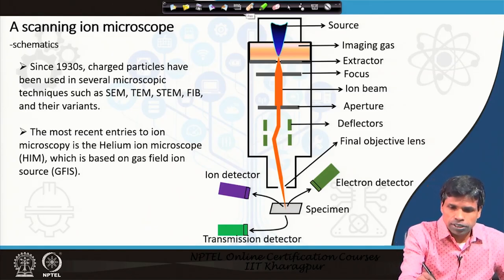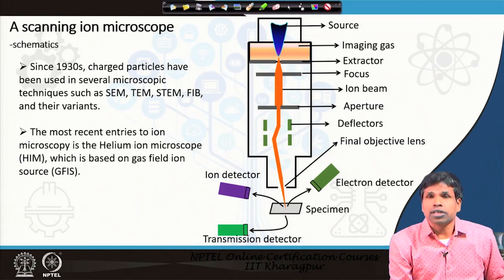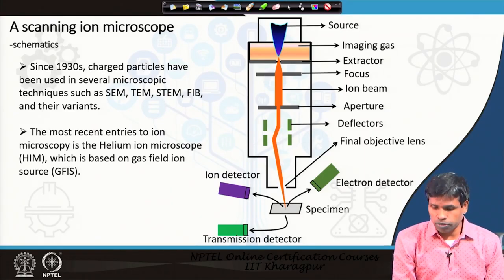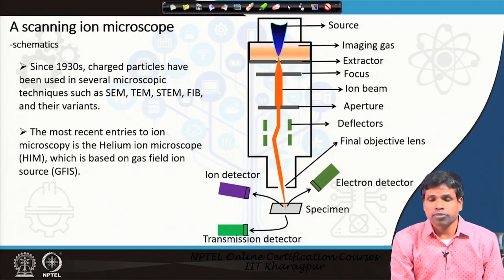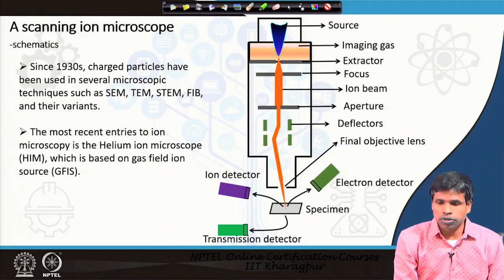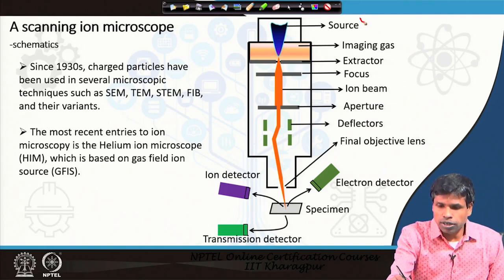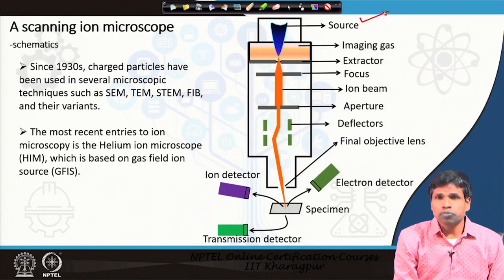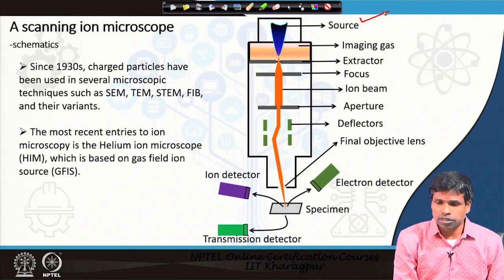The schematic is not much different as far as the arrangement is concerned, there are certain differences as compared to the scanning electron microscope. Both in the scanning electron microscope and helium ion microscope we have a source — in the electron microscope we call it an electron gun, here we call it an ion gun — sitting at the top of the microscope column. Since it is an ion gun, we need a particular gas; it can be helium, neon, or gallium.